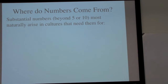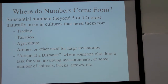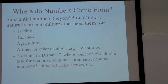One of the things is that substantial numbers — numbers beyond about 5 or 10 — most often come from certain kinds of needs in cultures. Cultures that do trading with other places, taxation, agriculture, armies, or other sorts of needs for large inventories of things. Action at a distance where someone else is doing a task for you, so you need to contract with them: I want some logs that are this size, I need some number of animals, I want you to take my supplies to market for me.